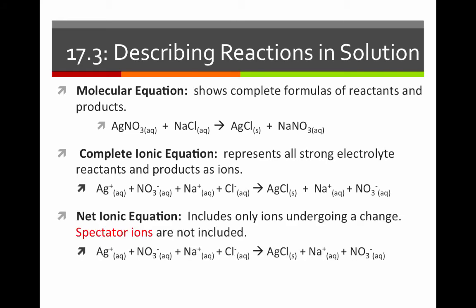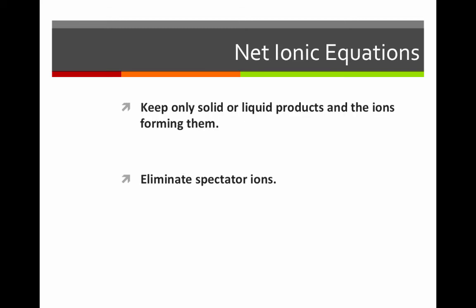Furthermore, we can write a net ionic equation, which includes only the ions that actually undergo a change. Here we eliminate spectator ions — ions that do not change from reactants to products. Taking the complete ionic equation, we eliminate any ion that appears on both sides unchanged. Nitrate appears on both sides not in a compound, and sodium appears on both sides not in a compound. Therefore, all that's left is Ag+ plus Cl- yields AgCl — our net ionic equation.